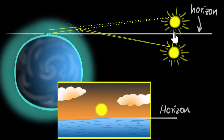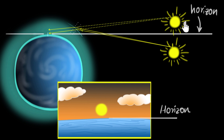Once the sun has set — which means it has gone below the horizon — because the light bends and reaches our eyes, we still get to see the sun. And that's why the sunrise happens earlier, and the sunsets are always delayed.